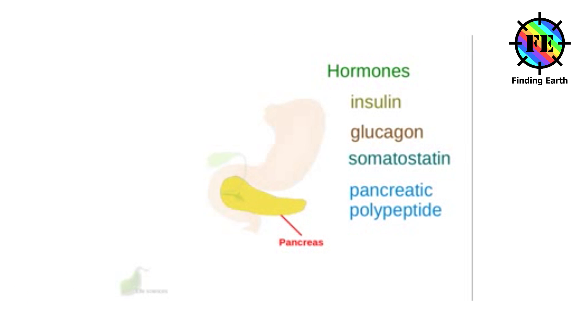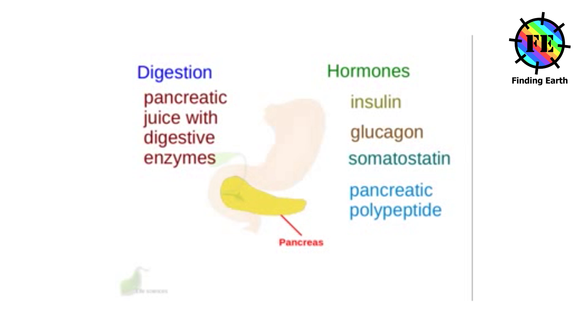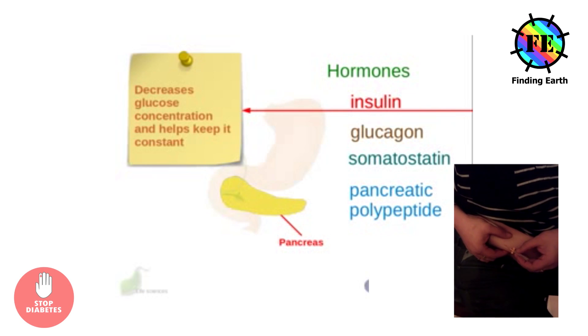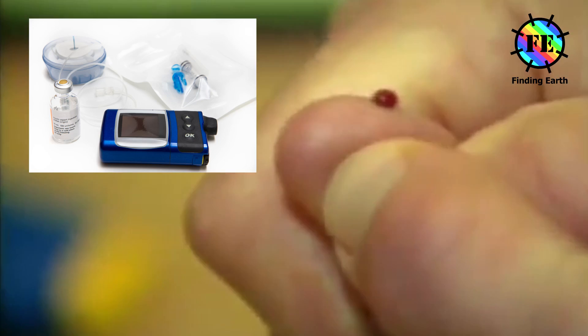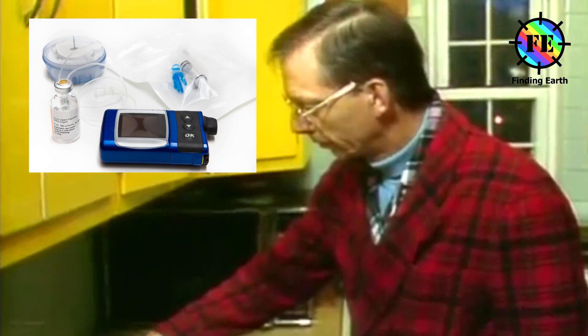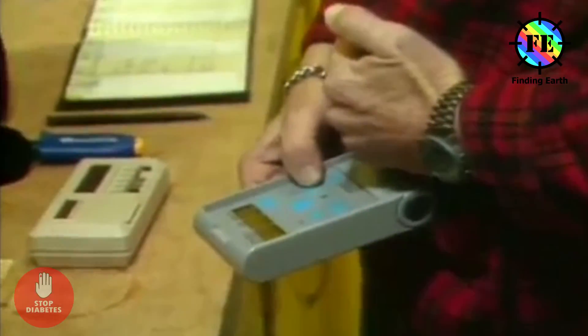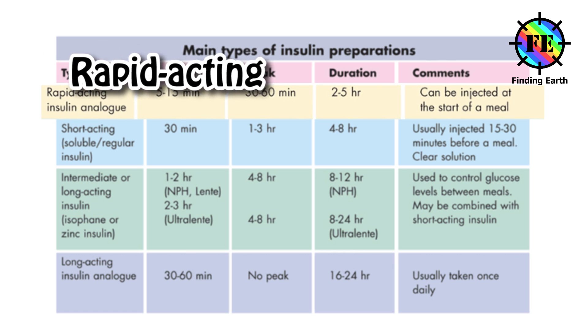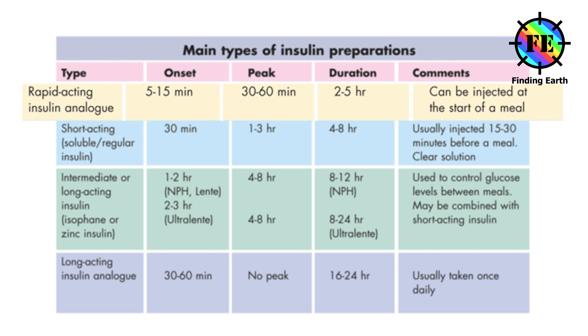For type 1 diabetes, the pancreas no longer makes the insulin your body needs, so you'll need insulin by injection or through a continuous pump. Learning to give injections is actually easy. Some people use a computerized insulin pump, which you and your doctor program to deliver a certain amount of insulin throughout the day.